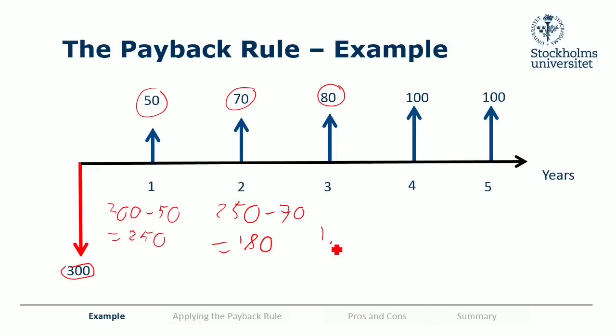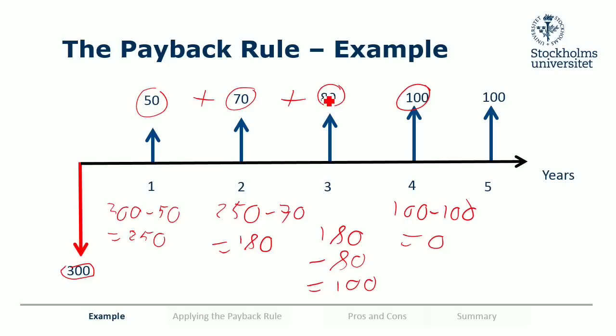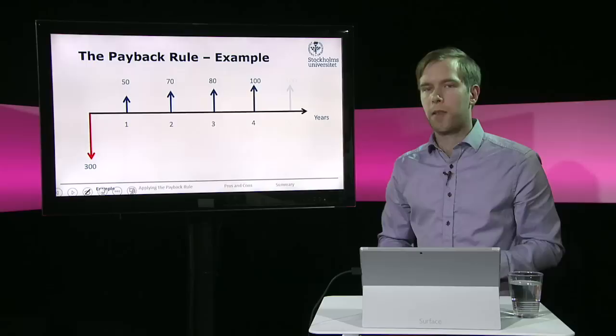In the third year we receive 80, so then we have 180 minus 80, which is 100 to go. And in the fourth year we receive 100, and then all of the initial investment of 300 have been recovered over these four years. So 50 plus 70 plus 80 plus 100 is equal to 300. So it takes us four years until we get our initial investment back.